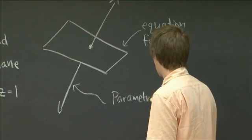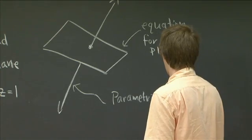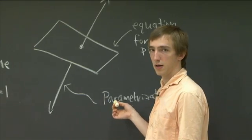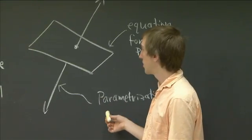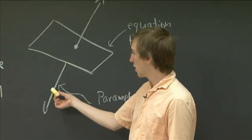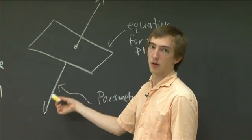And a parametrization is a different kind of thing than an equation describing a line. A parametrization, rather than being a test for membership, it's really a way of listing all the points on the line.